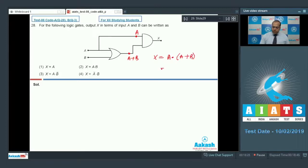So if I solve this algebra, this is AA plus AB. Further, AA can be written as A plus AB. Now if I take A as common, then it is written as 1 plus B and the value of 1 plus B can be written as 1. So this is equal to A. So option 1 is the correct answer.